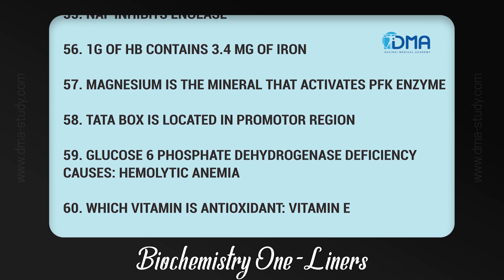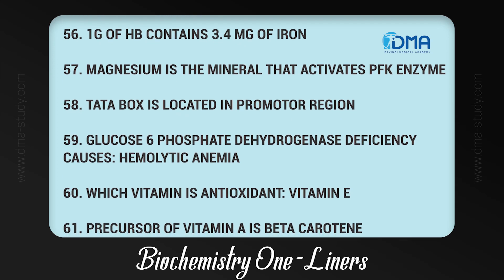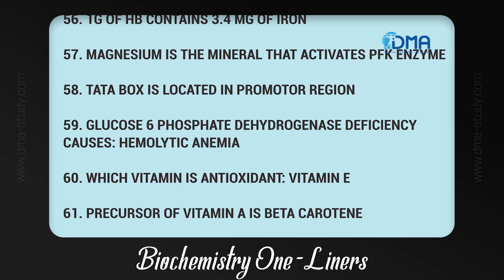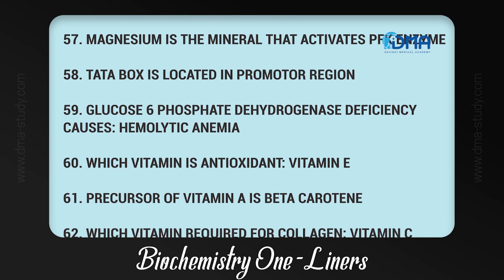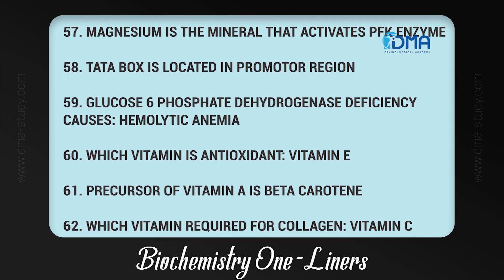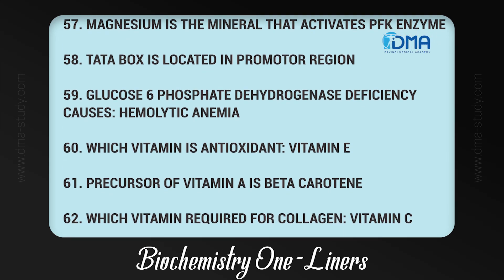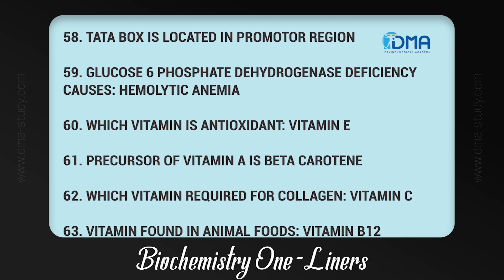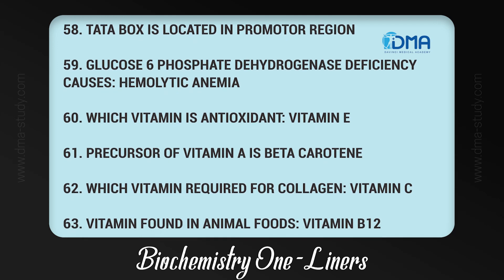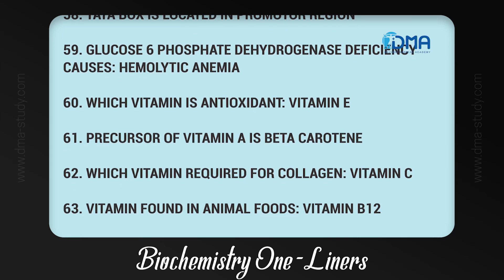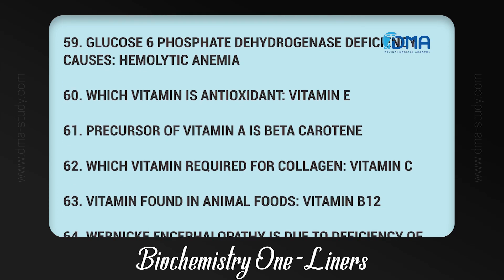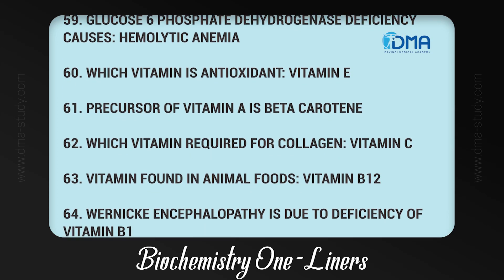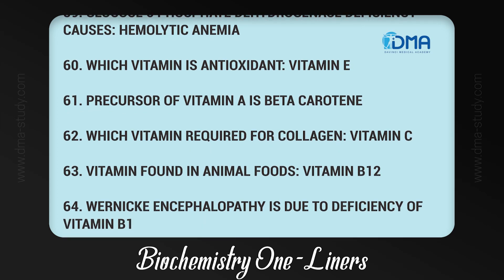59. TATA box is located in the promoter region. 60. Glucose-6-phosphate dehydrogenase deficiency causes hemolytic anemia. 61. Which vitamin is an antioxidant? Vitamin E. 62. Precursor of vitamin A is beta-carotene. 63. Which vitamin is required for collagen? Vitamin C. 64. Vitamin found only in animal foods is vitamin B12.